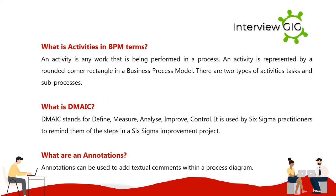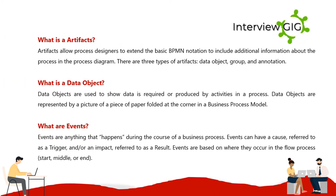What are activities in BPM terms? An activity is any work being performed in a process, represented by a rounded-corner rectangle in a business process model. There are two types of activities: tasks and sub-processes. What is DMAIC? DMAIC stands for define, measure, analyze, improve, control — used by Six Sigma practitioners for improvement projects. Annotations can be used to add textual comments within a process diagram. Artifacts allow process designers to extend the basic BPMN notation; there are three types: data object, group, and annotation.